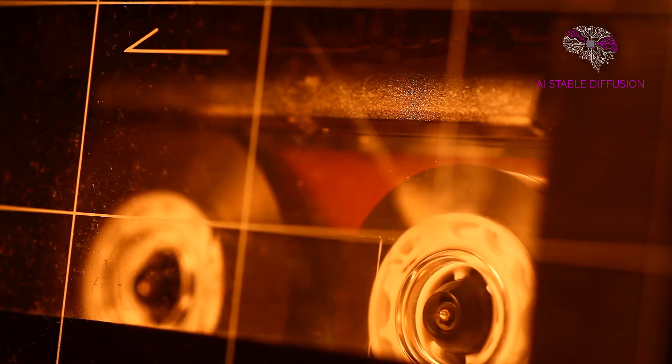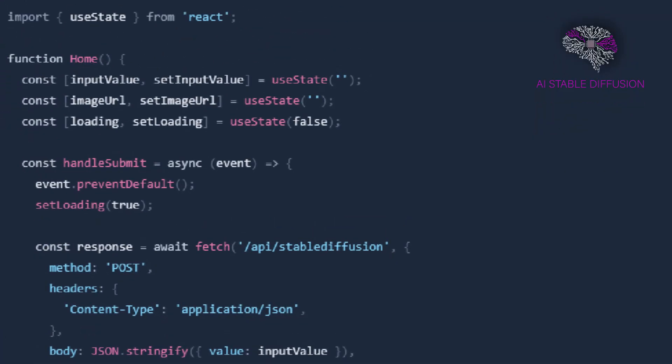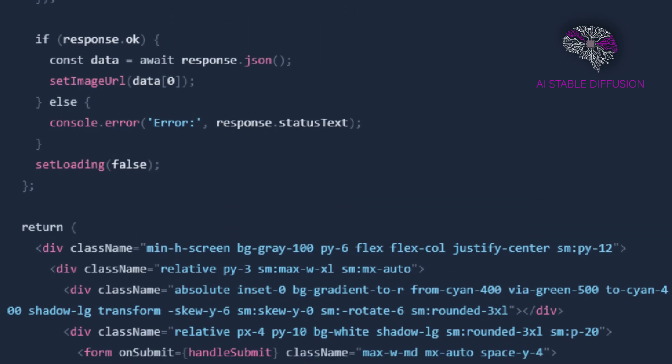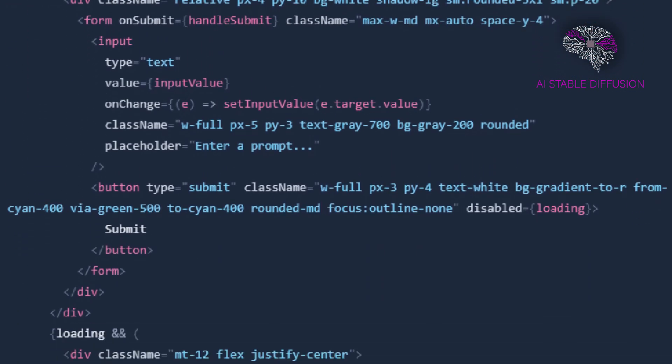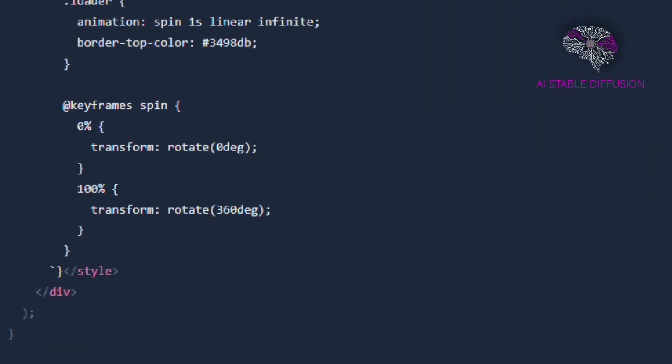Now, let's develop a form for users to provide their text prompts before creating the image generation form. Add the following code to your pages slash index.tsx file. By entering a text prompt and submitting the form, users can generate an image. While the image is being generated, a spinning loading indicator is also displayed.